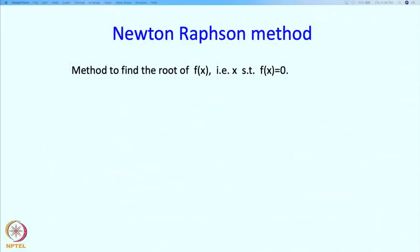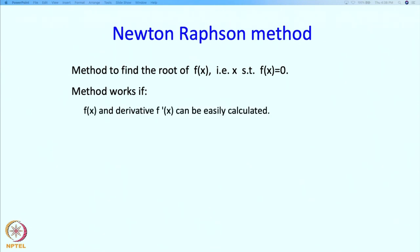The Newton-Raphson method is again a method for finding the root of some function f — that is, finding x such that f equals 0. This method is going to work if the following conditions are met: we should be able to evaluate f and its derivative f'(x), and we should have a good initial guess. If we are close to the root, then this method will quickly take us even closer. But if we are far, then this method occasionally may wander around too much.